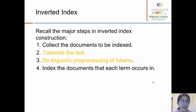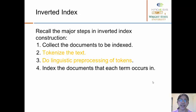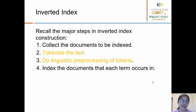In video module 2, we have seen how the inverted index maps words to its location across different documents. Recall the major steps in the inverted index: first, we select all the documents to be indexed; then we tokenize the text; then we use some pre-processing steps to filter the text before computing this inverted index; and finally, we index the documents that each term occurs in. In this lecture, we will see how we can pre-process this data to achieve better precision and improve our information retrieval using text processing methods.